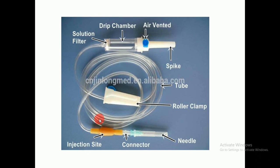You can check this labeled diagram and memorize the name of each part: spike, air-vented drip chamber, solution filter, tube, roller clamp, needle connector, and injection site. In my next lectures, I will discuss what the drugs are.